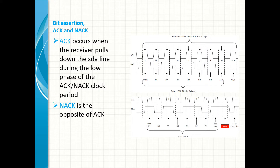Each byte of data must be acknowledged or not acknowledged by the receiver to signal successful or failed transmission. A byte can be a device address, register address, or data written or read from a slave. Acknowledge is sent by a receiver by pulling the SDA line low during the low phase of the acknowledge clock period. This assures stability during the assertion period of the SDA line, which is the low-to-high phase on the clock line. Not acknowledged occurs when the receiver lets the SDA line float and be pulled high.